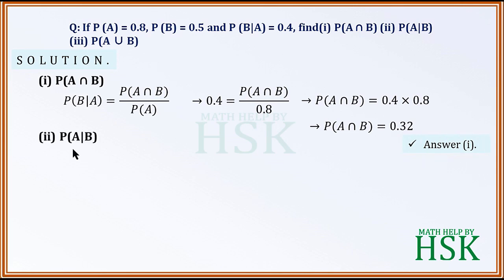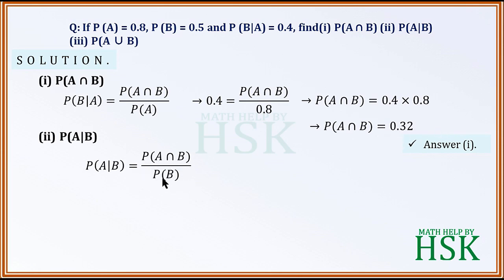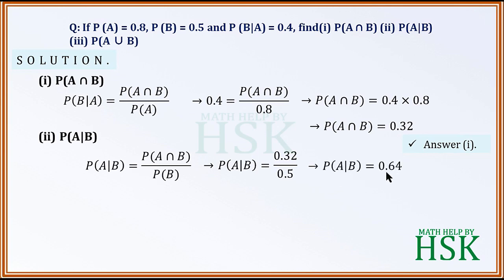In the second part, we calculate probability of A given B. Probability of A given B is equal to probability of A intersection B upon probability of B. Using 0.32 from the first part upon 0.5, this equals 0.64, which is the required answer for the second part.